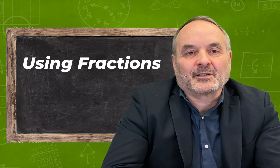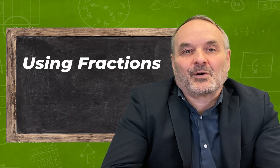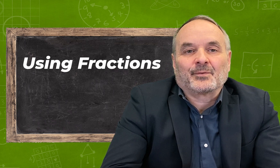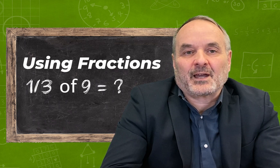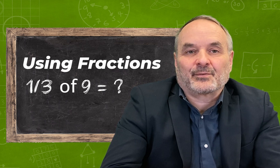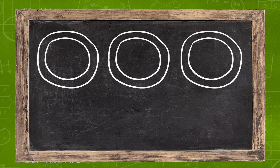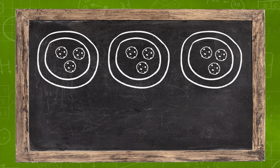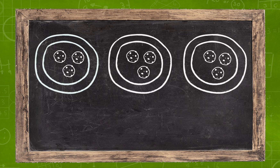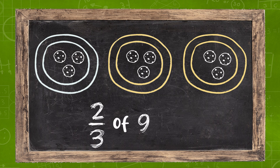To understand how to take a fraction of a number, it helps to use a simple model. For example, to understand how to take a third of nine, you could think about sharing nine cookies with three friends. You could draw three circles to represent three plates and put one cookie on each plate until you've shared them all. You can see from the picture that each friend gets three cookies, so one-third of nine is three. The same picture works for two-thirds of nine. But this time, instead of taking one plate, you'll take two plates. So two-thirds of nine is six.